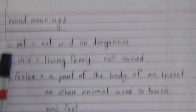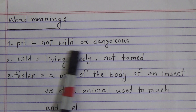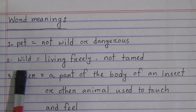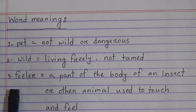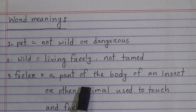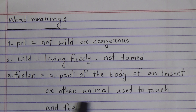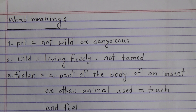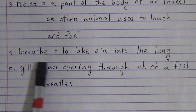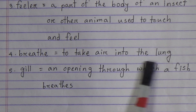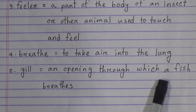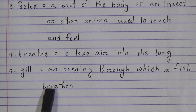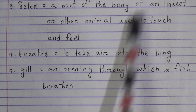Repeating the word meanings: pet means not wild or dangerous; wild means living freely, not tamed; feeler means a part of the body of an insect or other animal used to touch and feel; breath means to take air into the lung; gill means an opening through which a fish breathes. My dear students, learn these word meanings properly.